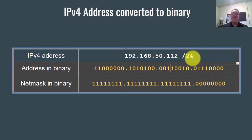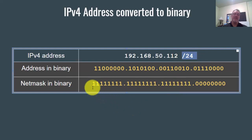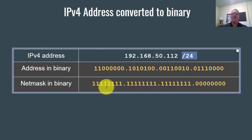Slash 24 in an IP address indicates the subnet mask, which means there are 24 ones in the subnet mask starting from the left. So we have eight ones, another eight ones, and another eight ones — that's 24 ones, or 255.255.255.0.